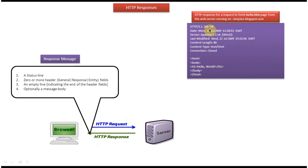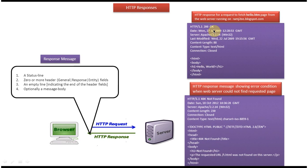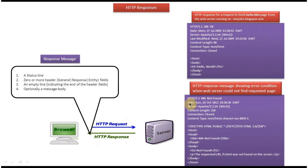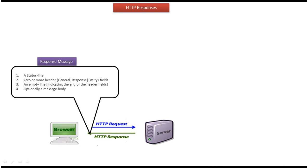This is the second sample HTTP response. The first line is the status line, and from date to content type is the response header information. Then there is a blank line indicating the end of the header fields, followed by the message body. Here you can see 404 Not Found, meaning the client sent a request to the server for a particular resource but the server could not find that resource, so it sends a 404 Not Found message to the client.